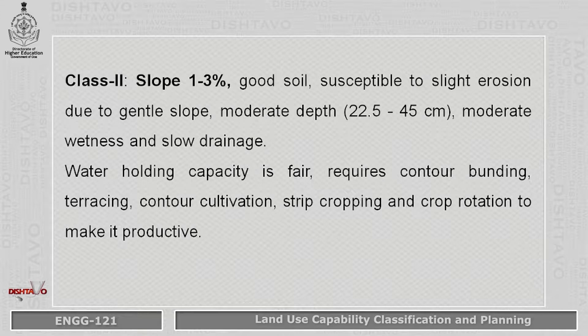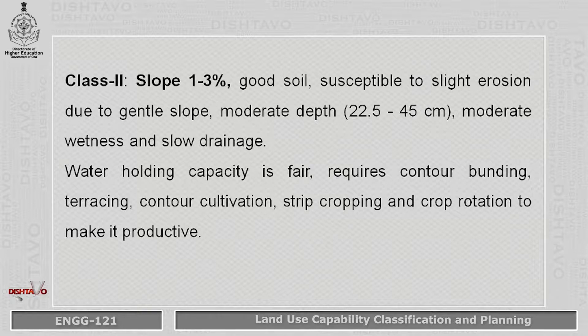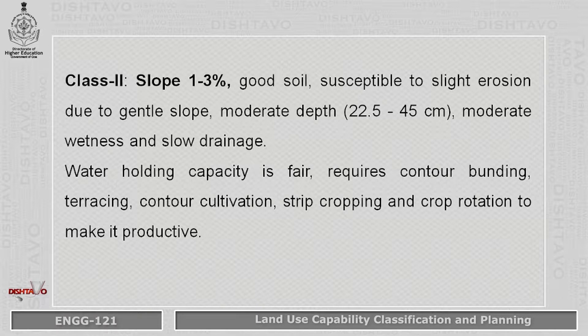Class 2 has a slope varying from 1 to 3 percent. This soil is good but has slight susceptibility to erosion because of the gentle slope of 1 to 3 percent. The depth of the soil varies from 22.5 to 45 centimeters. There is moderate wetness and slow drainage. Water holding capacity for class 2 is fair. It requires contour banding, or terracing, or contour cultivation for cultivating crops on that land.